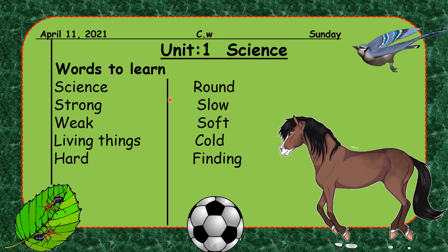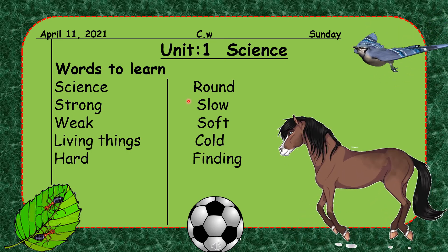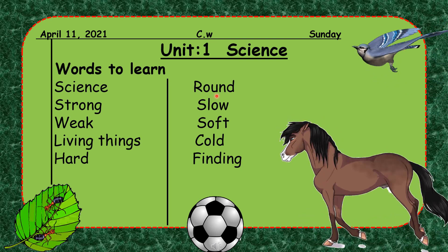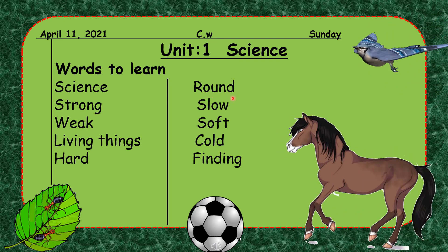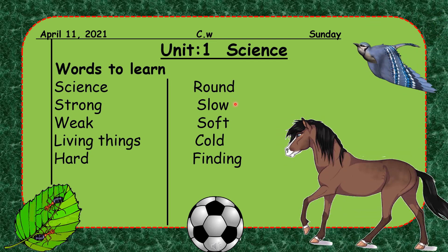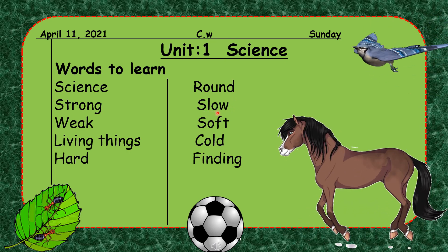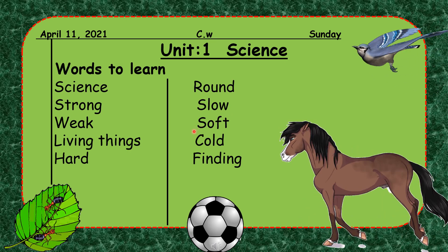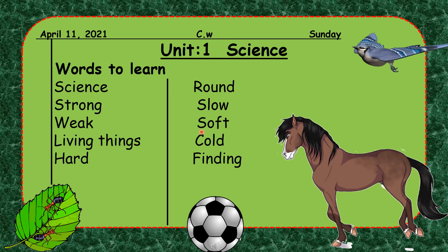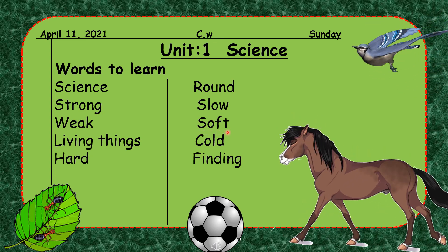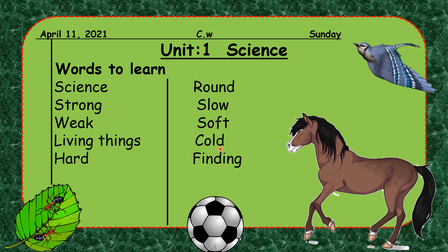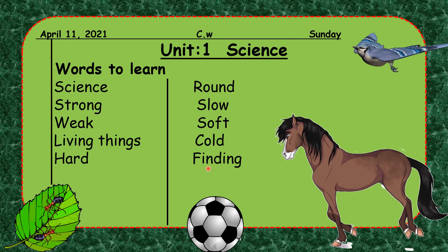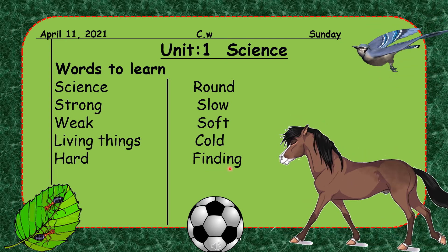Next word: round — R-O-U-N-D. Next: slow — S-L-O-W. Next: soft — S-O-F-T. Next: cold — C-O-L-D. And the last word: finding — F-I-N-D-I-N-G.